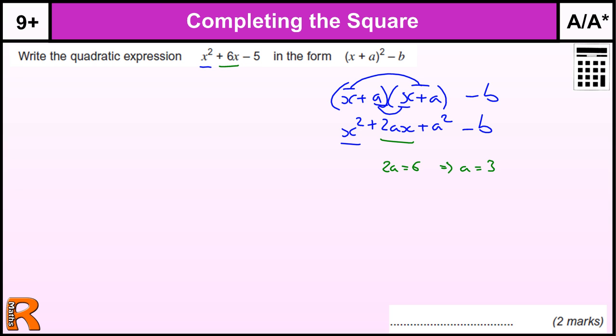And the third bit, we have A squared minus B is just the number that's on the end, the minus 5. So A squared minus B equals minus 5. Now we know A is 3 from what we've just done.